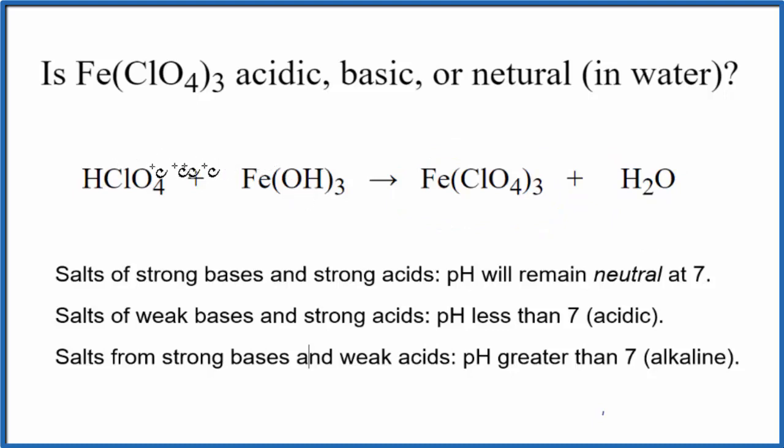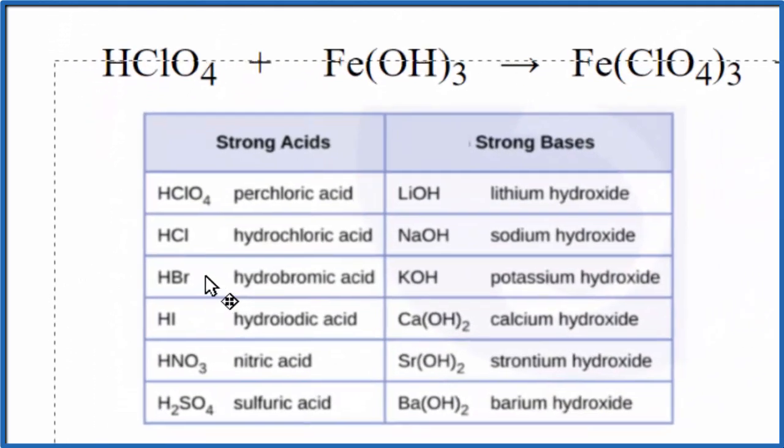Next, we need to figure out the strength of the acid and the base so we can use these rules to figure out whether iron 3 perchlorate is acetic, basic, or neutral. This table here is a really useful one to memorize.